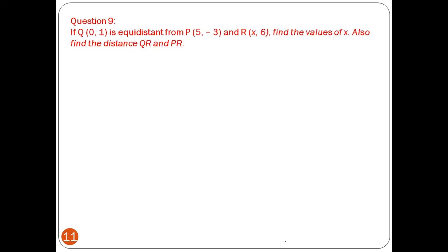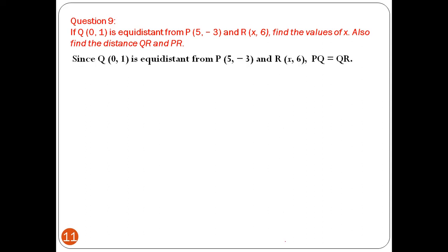Question 9: If Q(0, 1) is equidistant from P(5, -3) and R(x, 6), find the values of x. Also find the distances QR and PR. Since Q is equidistant from P and R, PQ = QR.